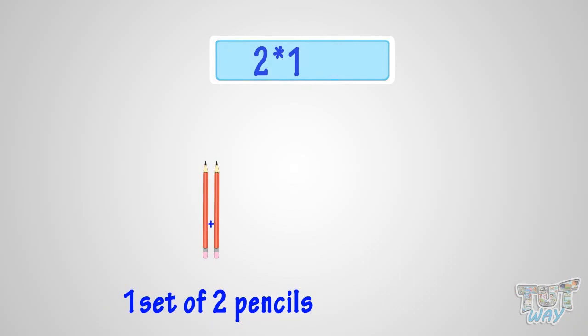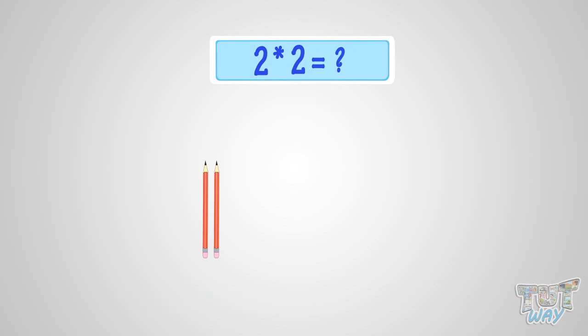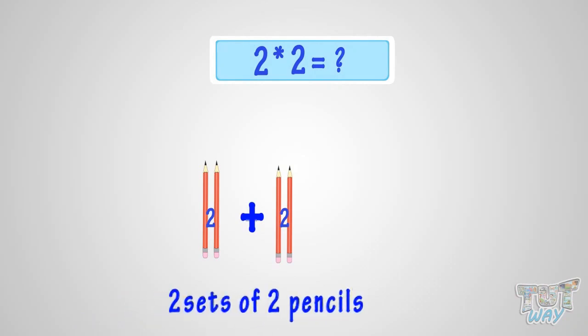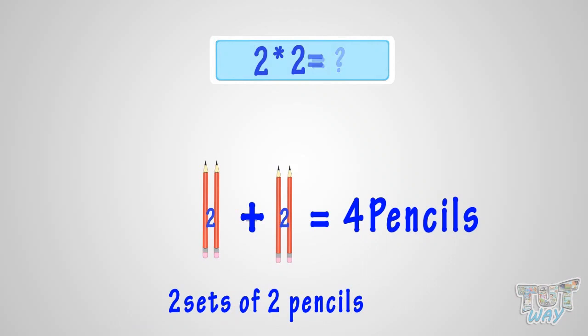What is two multiplied by two? It is the same as two sets of two pencils. It is four pencils. That is, two multiplied by two is four.